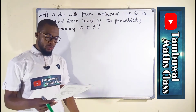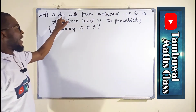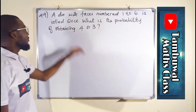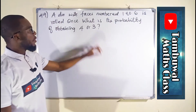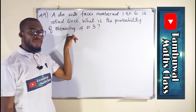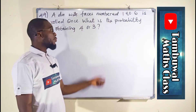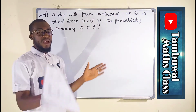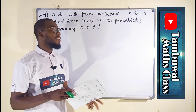Question 49 is a probability question. It says a die with faces numbered 1 to 6 is rolled once. What is the probability of obtaining 4 or 3? In probability, once you hear the word OR, it means addition. If you hear AND, it's multiplication.